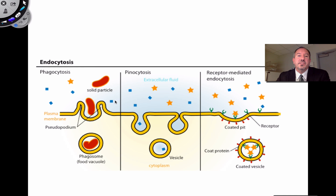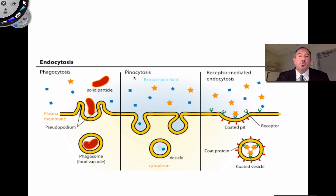Endocytosis can be categorized into three classic types. The first is phagocytosis — cellular eating — used for large solid particles. The second is pinocytosis — from the Greek meaning cellular drinking — which involves taking in large molecules in fluid form. Water itself doesn't come in this way; water simply diffuses across the cell membrane or travels through facilitated diffusion via water channel proteins called aquaporins.